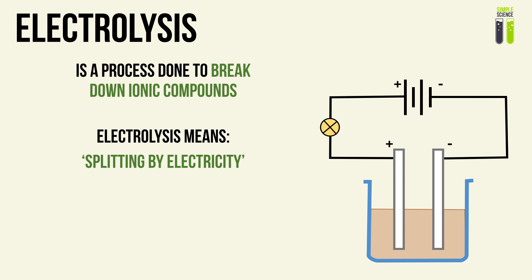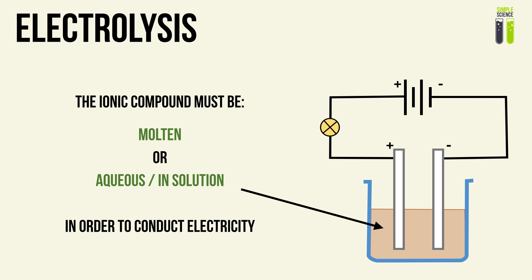Electrolysis is done to separate compounds, and more specifically, ionic compounds. Electrolysis basically means splitting by electricity — using electricity to split these compounds. Strictly, these compounds must be in molten liquid or aqueous solution.